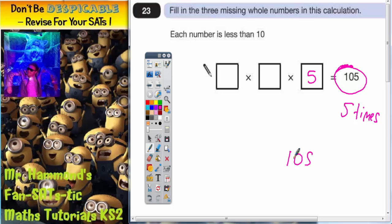If we do 105 shared by 5. So 5s into 1 won't go, carry the 1. 5s into 10 goes twice. 5s into 5 goes once. So 5s into 105 goes 21 times.